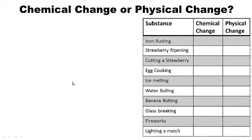Let's look at some chemical or physical change examples. Draw this table for your notes — it's very important. Go ahead and determine whether each example is a chemical or physical change. When you're ready to see the answers, go ahead and hit play. Pause this now.